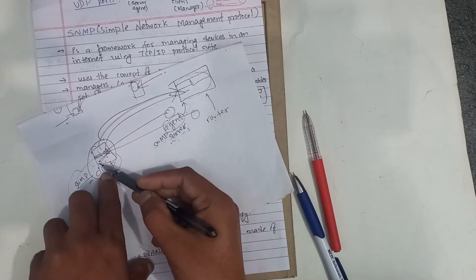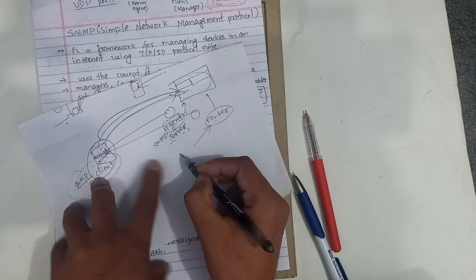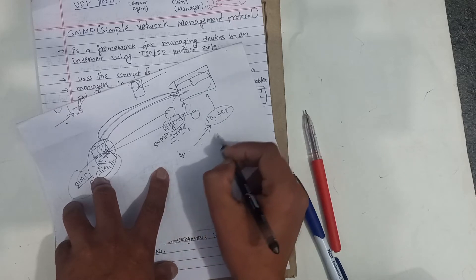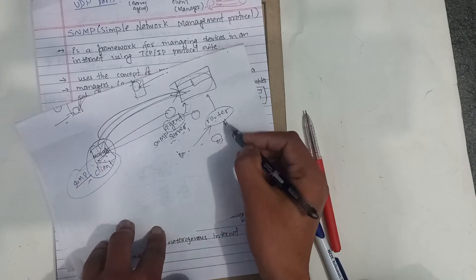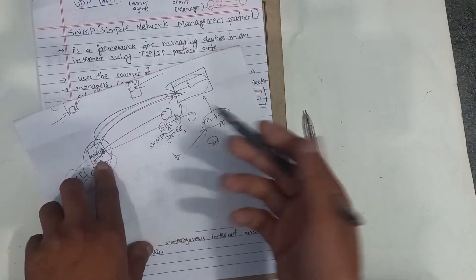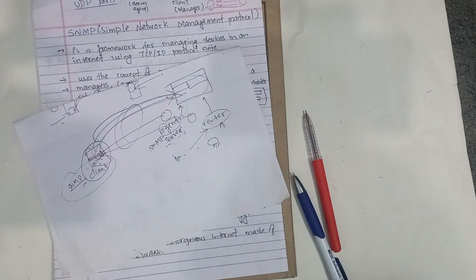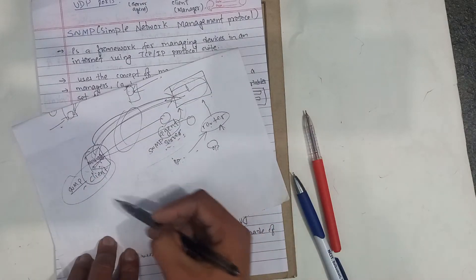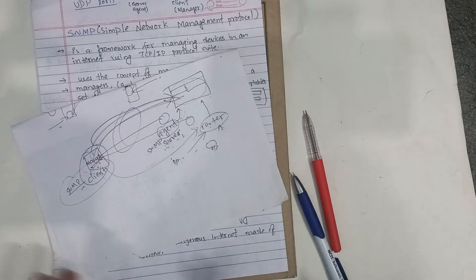What can the manager do? The manager can read from the particular router — for example, input packets and output packets. The manager can be processed remotely; it does not need a direct connection. You can control the router through the manager, and the router or agent manages the device.